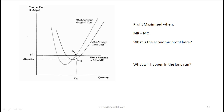This should look familiar. We are looking at the demand and cost curves for a firm in a perfectly competitive market. This horizontal line at 5.71 is a firm's demand curve — it's also the average revenue curve and the marginal revenue curve. This firm is a price taker, which means it can sell as much as it wants at the market price of 5.71.